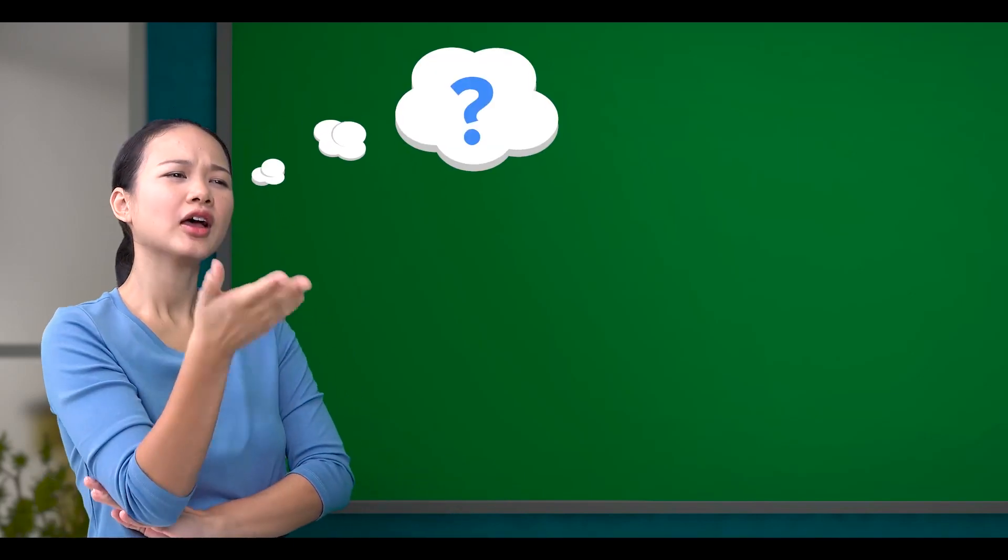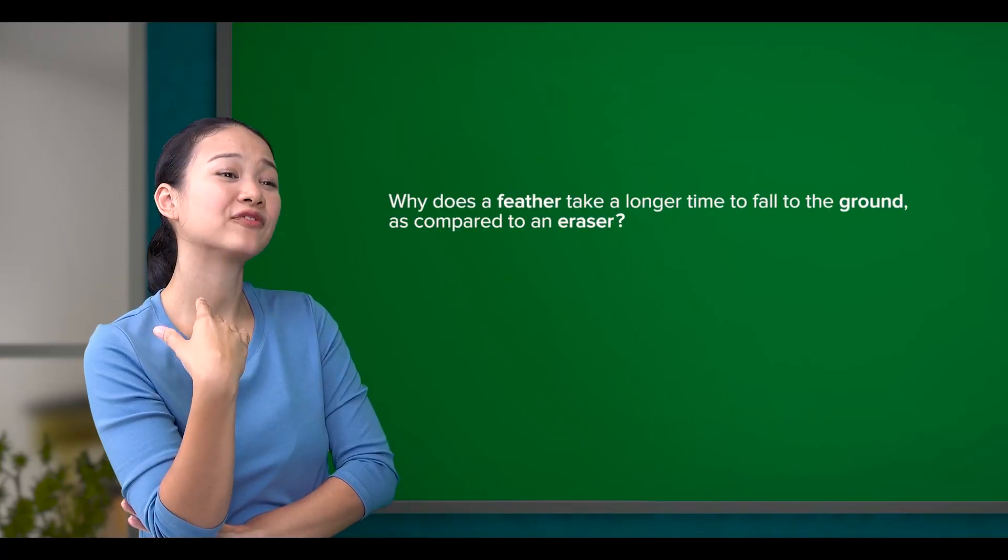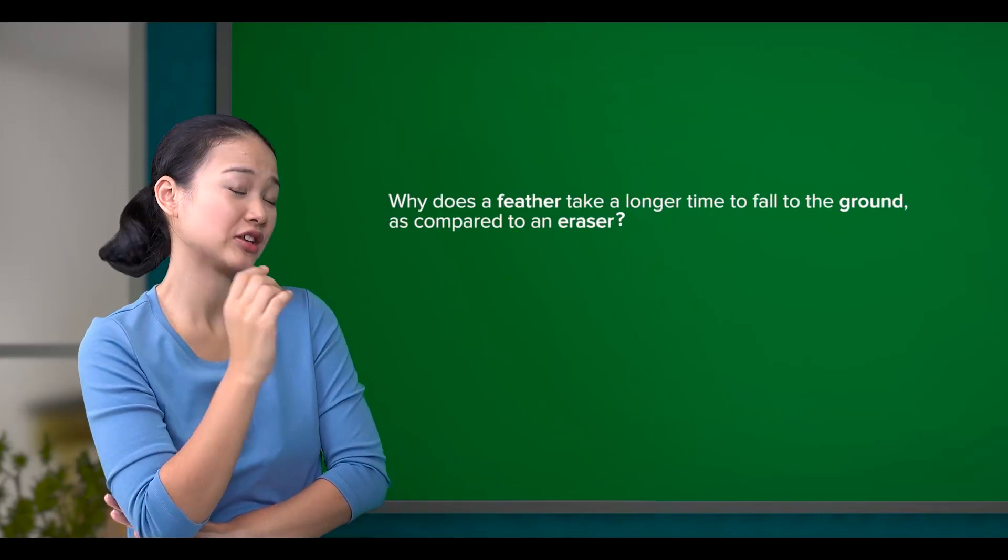I always thought that heavier objects would fall faster than lighter ones. Hang on, a feather is lighter than an eraser, right? Yes. Then why does a feather take a longer time to fall to the ground as compared to an eraser?